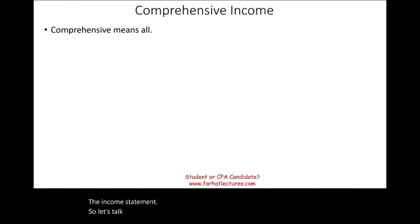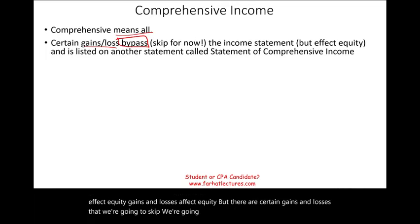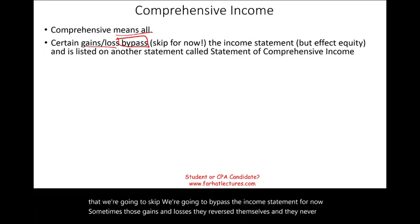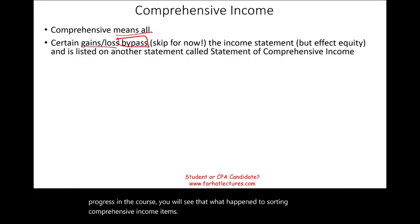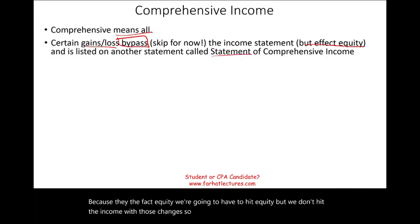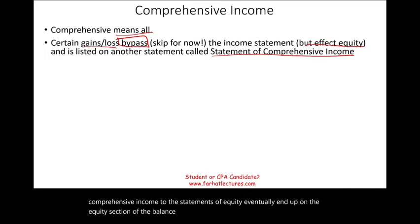So let's talk about comprehensive income. What is comprehensive income? Comprehensive means all — it means everything that affects equity. Gains and losses affect equity, but there are certain gains and losses that are going to bypass the income statement. Sometimes those gains and losses reverse themselves and never see the income statement; sometimes they end up on the income statement, depending on what we're dealing with. Because they affect equity, we hit equity, but we don't hit the income statement. So they're listed initially on a statement of comprehensive income, then transferred to the statement of equity, and eventually end up on the equity section of the balance sheet.